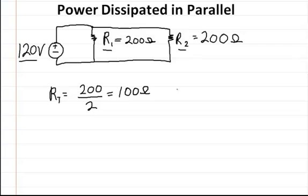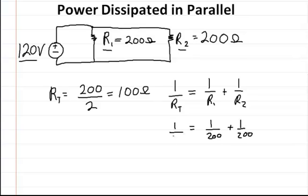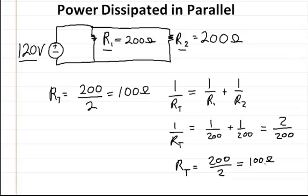But if you don't want to do it this way, you could always do it the more traditional way. So it's 1 over the resistance in parallel is equal to 1 over R1 plus 1 over R2. And you can use this formula, and it'll do exactly the same thing. So that's 1 over 200 plus 1 over 200 is equal to 1 over RT. Now if you add those two together, you're going to get 2 over 200. And then if you cross multiply, you're going to get RT is equal to 200 over 2, which is going to be equal to 100 ohms. So you get the same value.